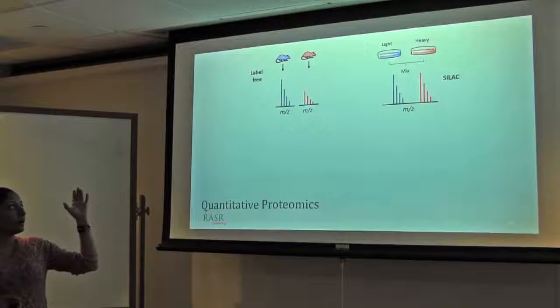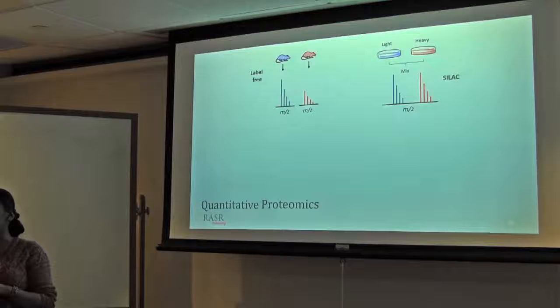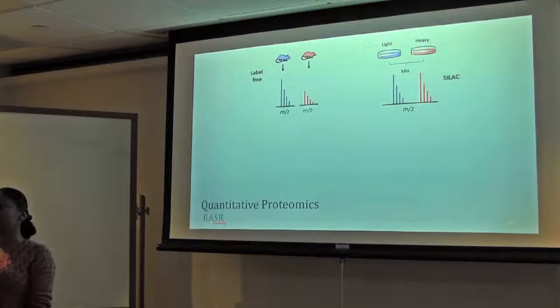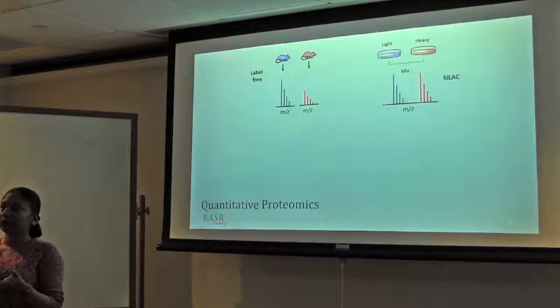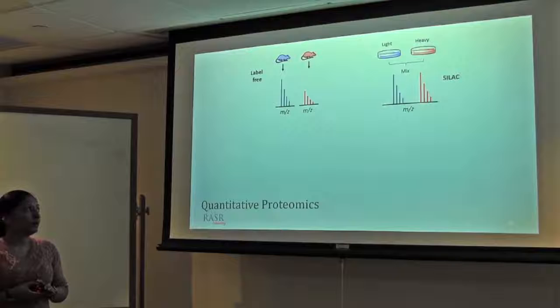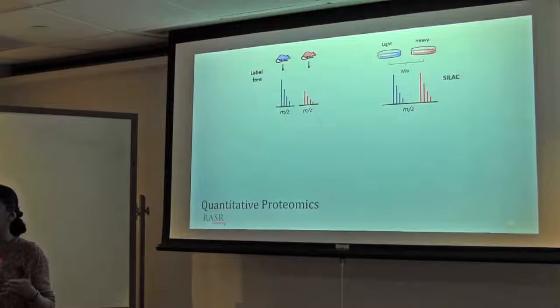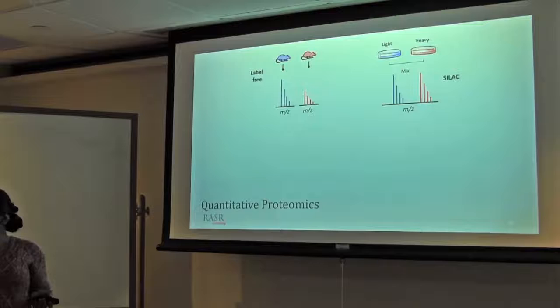Afterwards, after four or five cell cycles, it's nearly 100% incorporation of heavy amino acids. Then you can combine both samples together, process them together, and analyze them together as well. Though these amino acids are pretty expensive, plus you are using a lot of them because you are providing as a media, as a source, basic source of their carbon chain. So it's a pretty expensive technique, but it helps you to reduce variation, plus minimizing the labor as well.